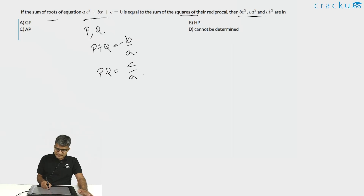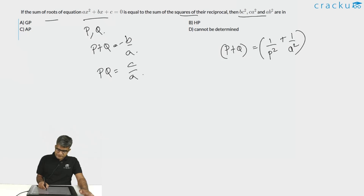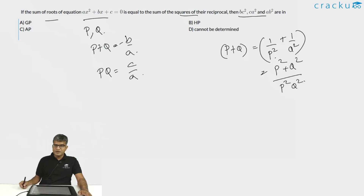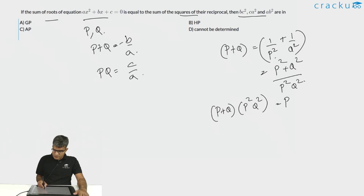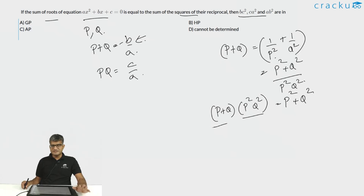We are told p + q equals the sum of squares of the reciprocals, which is 1/p² + 1/q² = (p² + q²) / (p²q²). Cross-multiplying: (p + q)(p²q²) = p² + q². We substitute: p + q = -b/a, and since pq = c/a, we get p²q² = c²/a². So the left-hand side is (-b/a)(c²/a²).